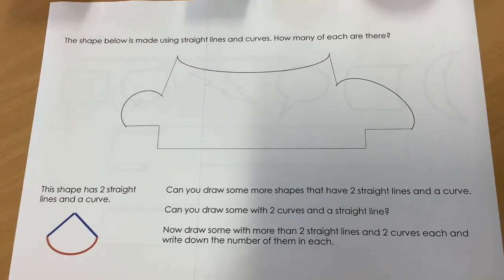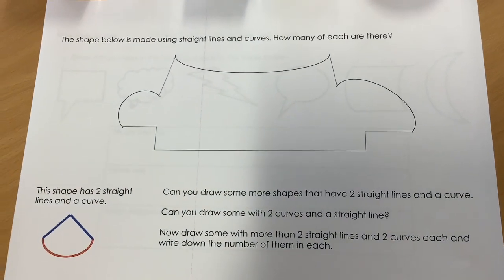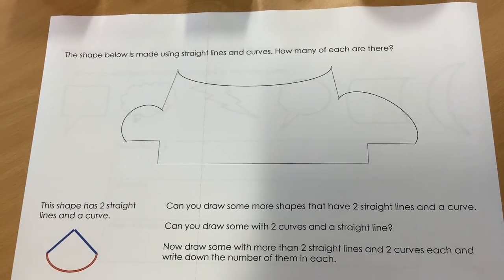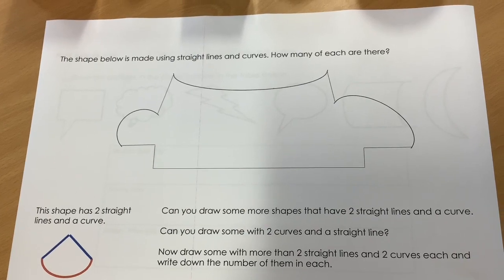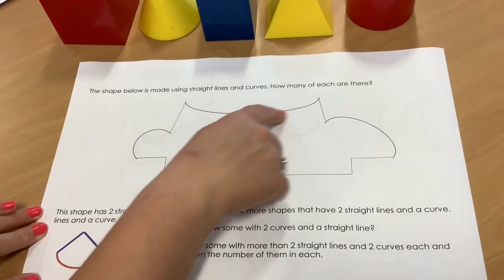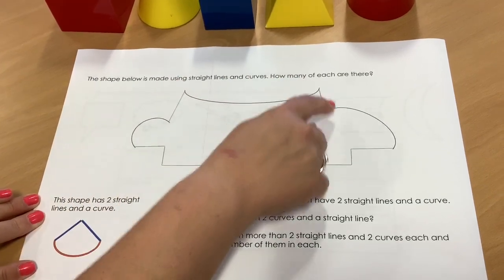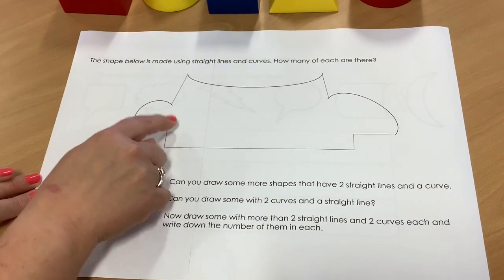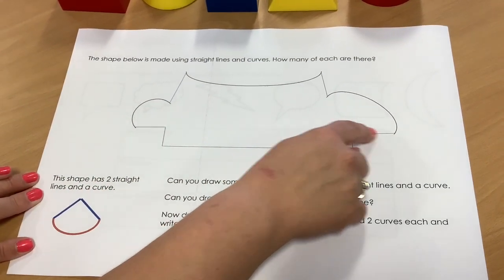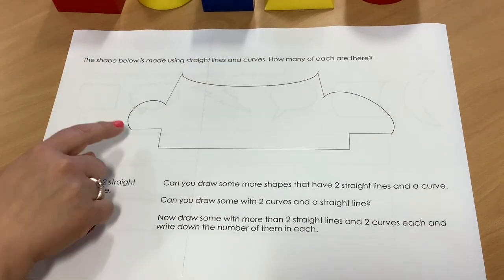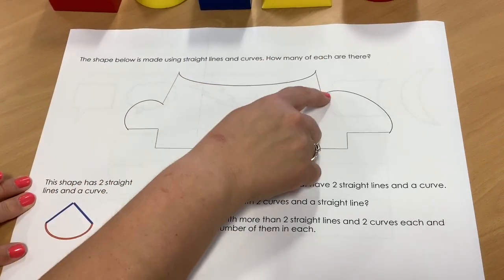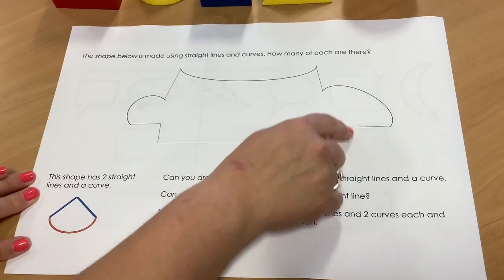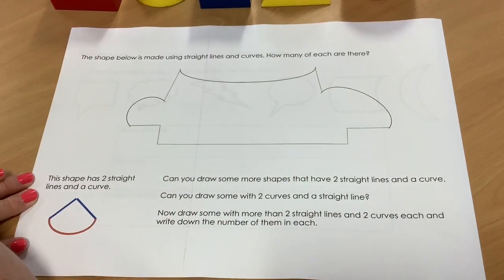We can make up shapes and have a look at them and see the different types of lines that they are made of. This one is made up using straight lines and curves. Pause the video and see if you can count how many of each there are. So if you run your finger along the lines, it's a good way to identify whether it's curved, because you can feel your finger moving around the curve, and then on the straight line you can feel a very definite change in the way that your finger moves along that paper. On this one, we can see there are 1, 2, 3 curved lines and 1, 2, 3, 4, 5, 6, 7 straight lines.